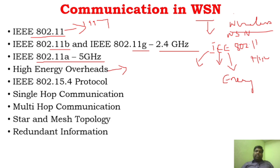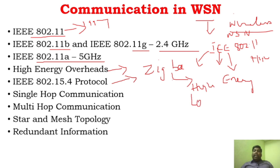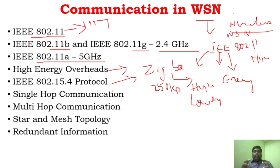A lot of other protocols have emerged for communication in WSN. The very important protocol is IEEE 802.15.4, which is used in Zigbee. Zigbee supports high data rate at low energy, which is very important. The energy consumed by this protocol is low, and it can support a maximum data rate of 250 kbps. Zigbee is preferred for any small range of communications. It is a very suitable protocol for embedded applications, wireless sensor networks, and monitoring and control applications, because of its low energy consumption.